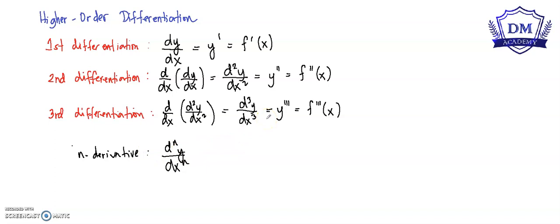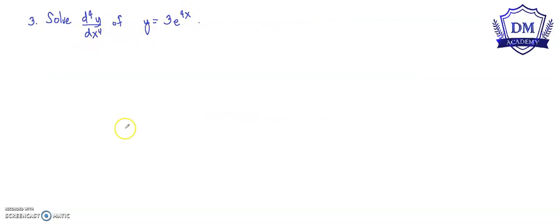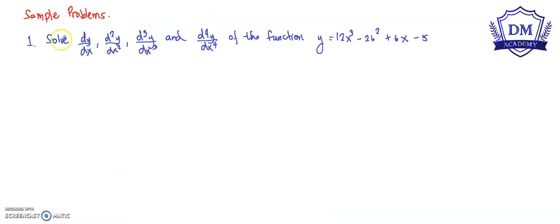Let's have sample problems to understand more about higher order differentiation. We will solve the dy over dx, the d squared y over dx squared, the third differentiation, and the fourth differentiation of the function y is equal to 12x cubed minus 26x squared plus 6x minus 5.